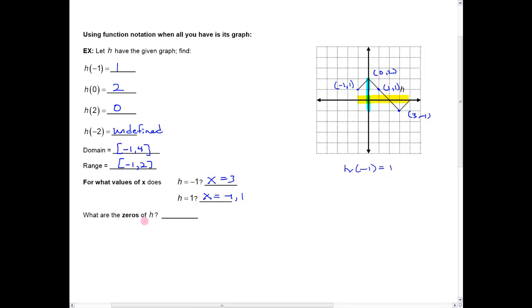And then what are the zeros of h? Well, the zeros are where the function value is zero. So that's just the same thing as saying where is h equal to zero. And you can see that those are going to be these values here at 2 and 4.